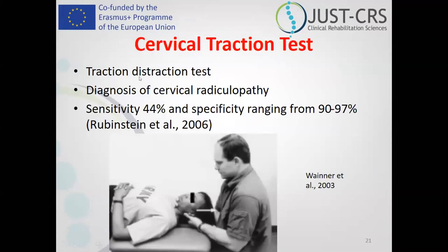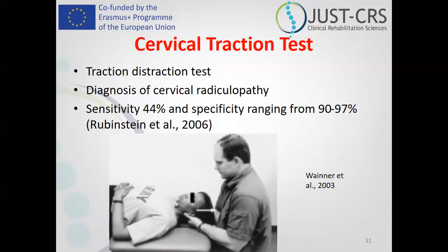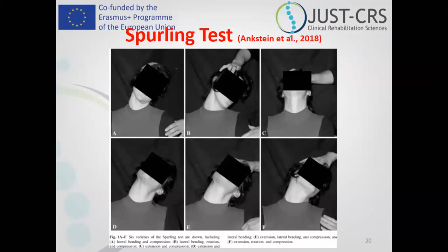The cervical traction (distraction) test: the patient lies supine and cervical traction is applied. If upper extremity pain disappears during traction, there is a neurological component. Sensitivity is 44%, and specificity ranges from 90% to 97%. The low sensitivity means only 44% of confirmed radiculopathy cases test positive. However, the high specificity means the test is very good at ruling out radiculopathy. Spurling test also has limitations in sensitivity and specificity. This is why we are shifting from single tests to using clusters of tests.